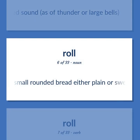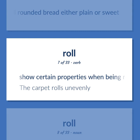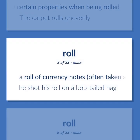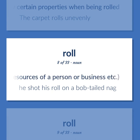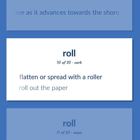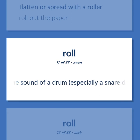Small rounded bread, either plain or sweet. Show certain properties when being rolled — 'The carpet rolls unevenly.' A roll of currency notes, often taken as the resources of a person or business — 'He shot his roll on a bob-tailed nag.' A long heavy sea wave as it advances towards the shore. Flatten or spread with a roller — 'Roll out the paper.' The sound of a drum, especially a snare drum, beaten rapidly and continuously.